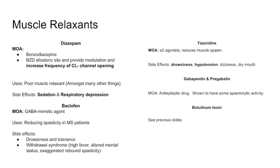We start with diazepam, a benzodiazepine. There's a specific receptor that is a chloride channel — when the benzodiazepine receptor is activated, it increases the frequency of channel opening. It's mostly used for sedation and memory loss effects, but it can be used for muscle relaxation, though it's historically not very good at that. Side effects include sedation and, as we'll get into in future lectures, respiratory depression.